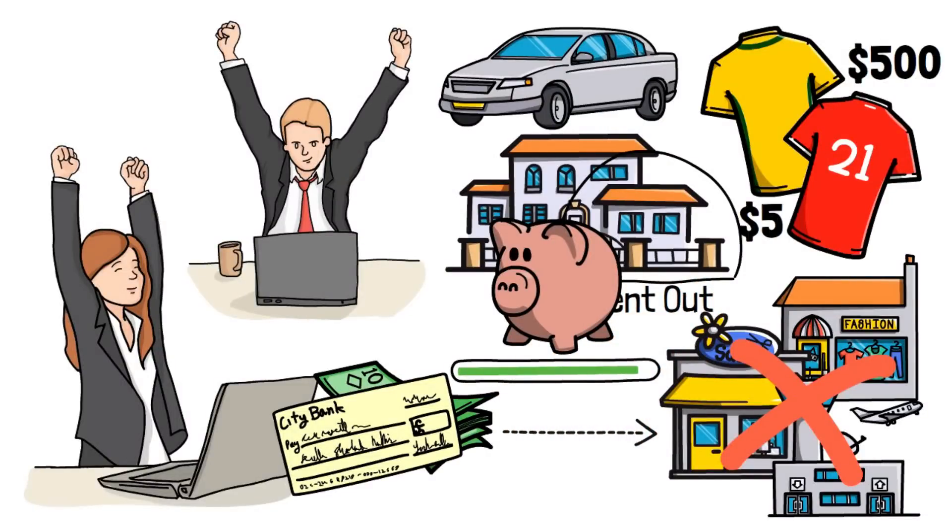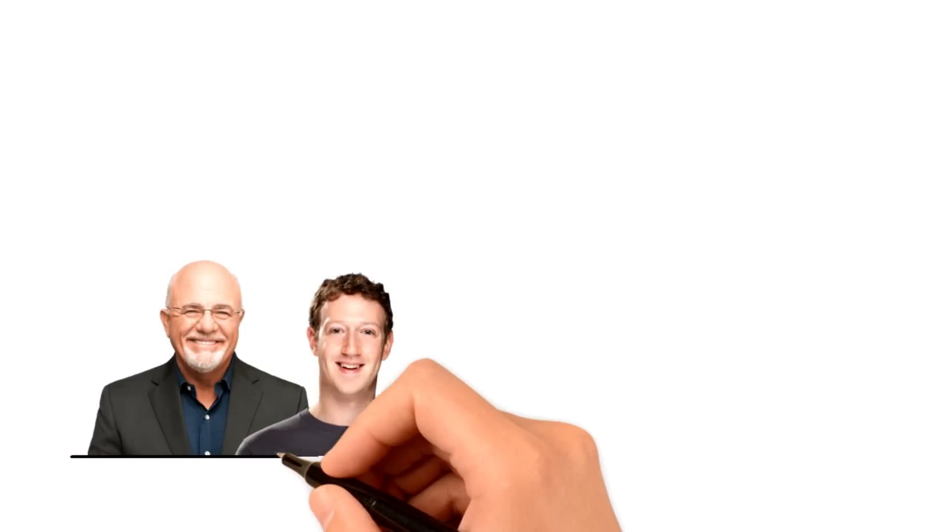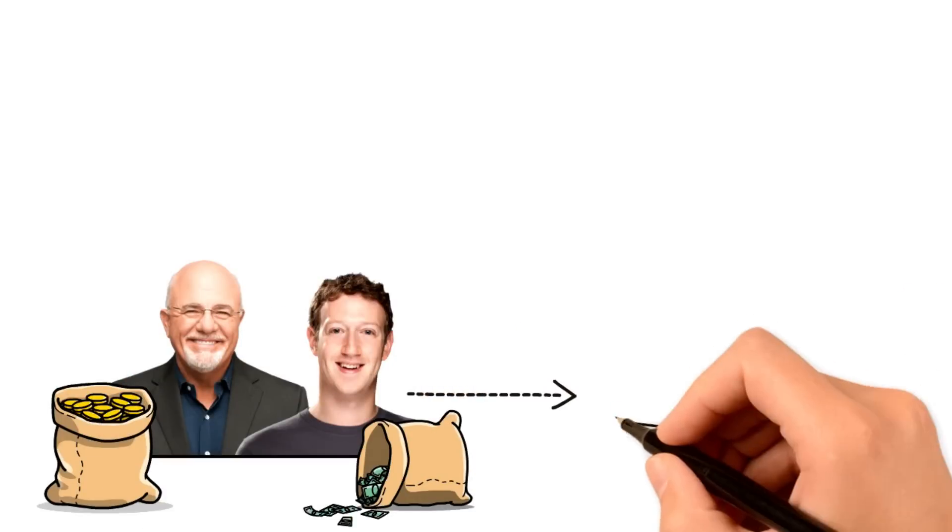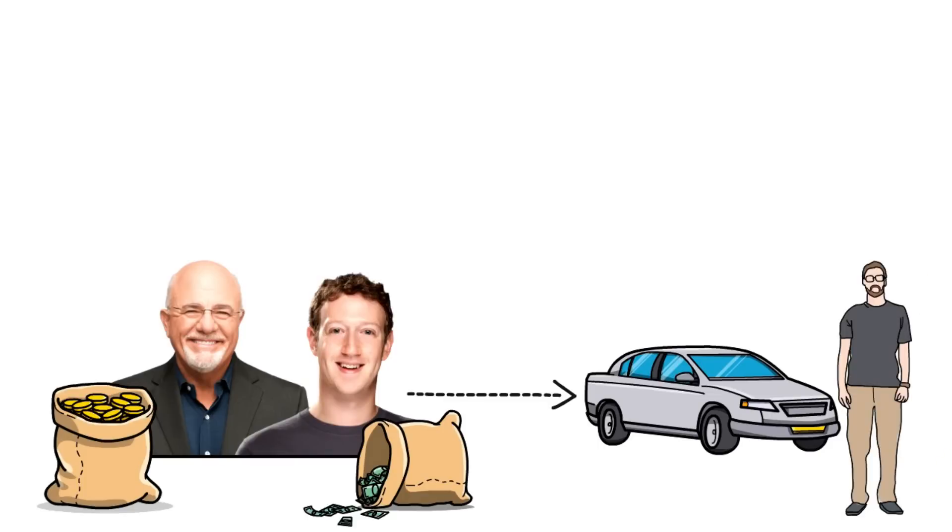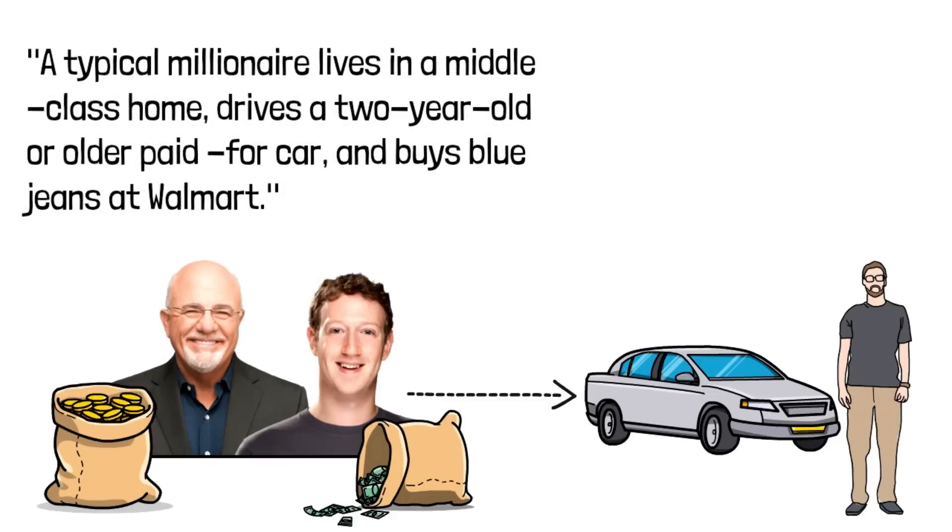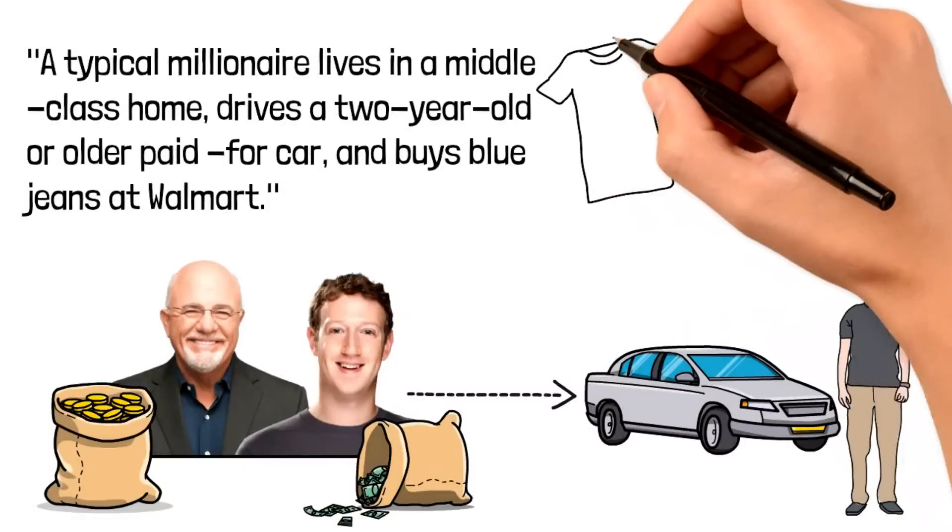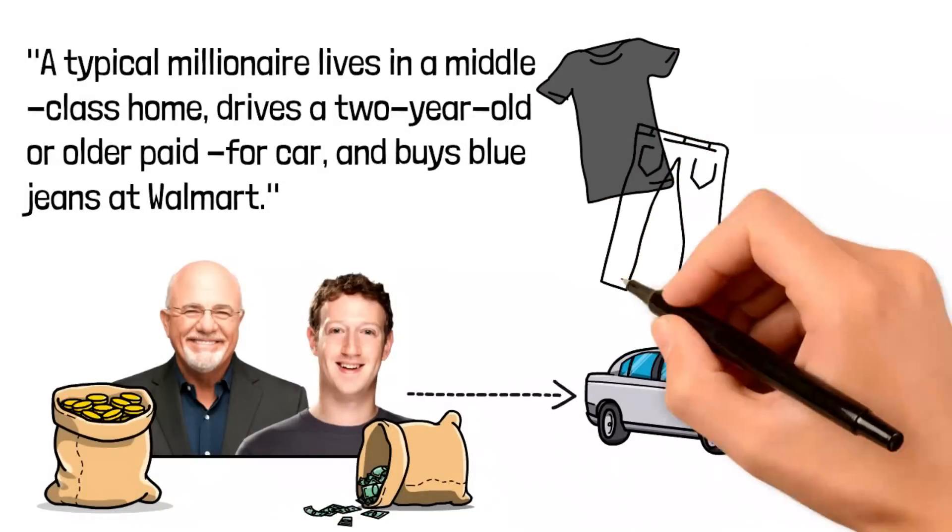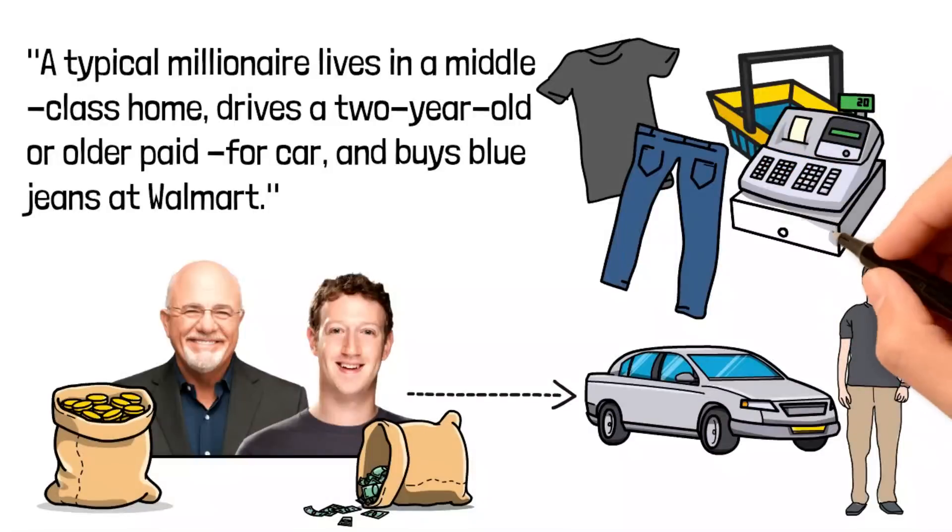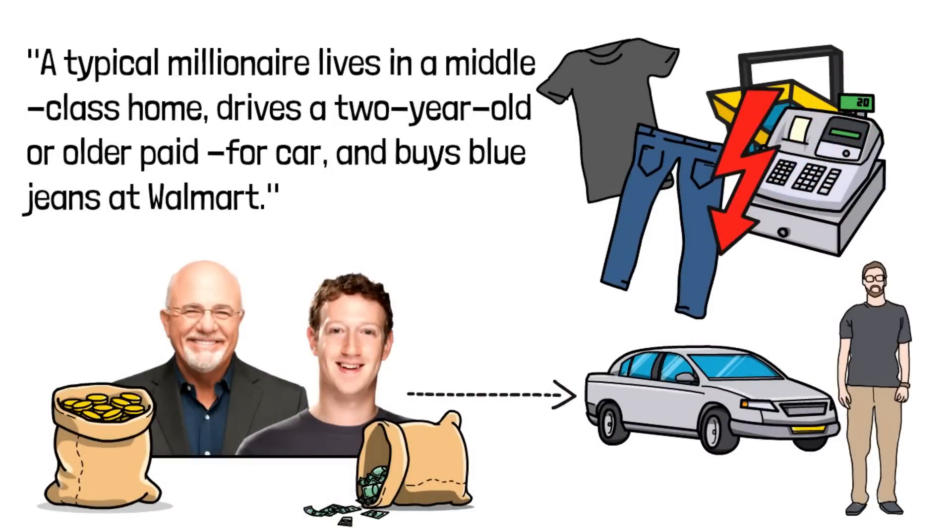Just look at billionaire CEOs of today, the likes of Dave Ramsey, Mark Zuckerberg, and others. They typically do not wear fancy shirts or drive fancy cars. Everything is kept simple. Dave Ramsey puts it best. A typical millionaire lives in a middle-class home, drives a two-year-old or older paid-for car, and buys blue jeans at Walmart. Even if wearing a $5 shirt or jeans isn't your thing, the bottom line is that you must pay more attention to your spending than your earnings. Oh, and there's one other thing you must pay attention to too.